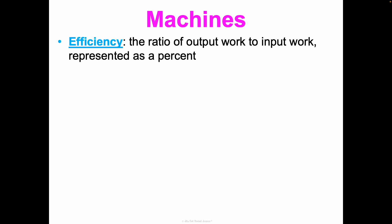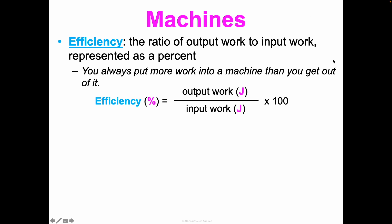So first, efficiency. This is the ratio of the output work to the input work. And it's represented as a percent. So you're always going to put more work in a machine than you get out of it. But the percent efficiency is the output over the input times 100. So if a machine is 90% efficient, it's pretty efficient. If it's 20% efficient, it's not super efficient. Other ways to explain this would be like if you put 80 joules of work in and then the machine puts out 60 joules of work, it was 75% efficient.